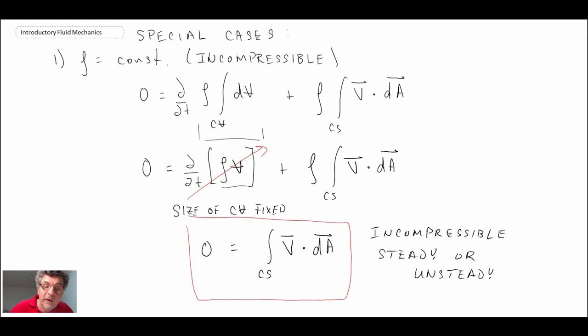The next one we're going to look at is the special case of a steady flow. And if you have steady flow, what happens is anything that has a time derivative goes to zero. And consequently, with that, the first term in the continuity equation, let me write it out.